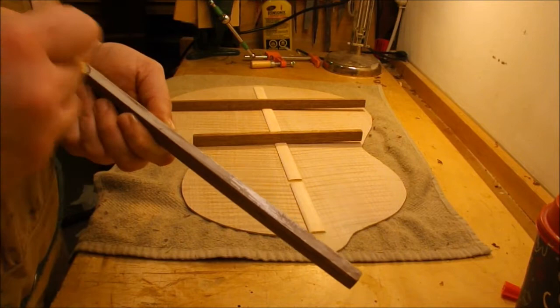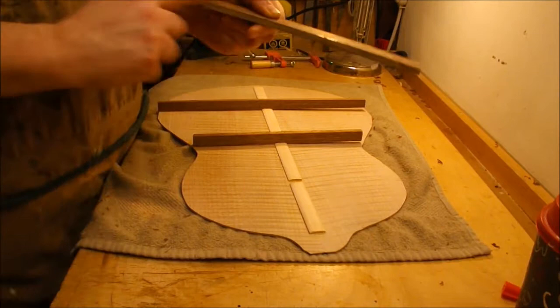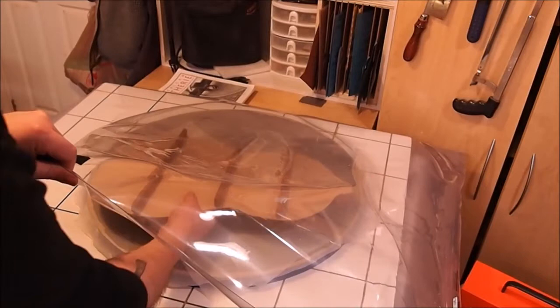So get just enough glue on there just for a little bit of squeeze out. Don't want a whole lot of it gobbing up everything and messing stuff up. We'll put that in place and then the entire thing gets set inside the vacuum bag on top of my radius dish.